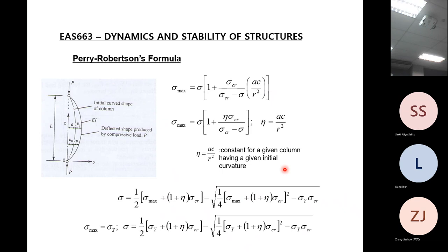We want to determine sigma, which is related to P - how much load we can apply. We rewrite the equation, which is a quadratic equation in sigma, and solve it. From the roots of the quadratic we take the minimum value - the plus or minus gives two roots so we take the minimum. This gives the stress allowed in that imperfect column, and multiplying by area gives the allowed load.